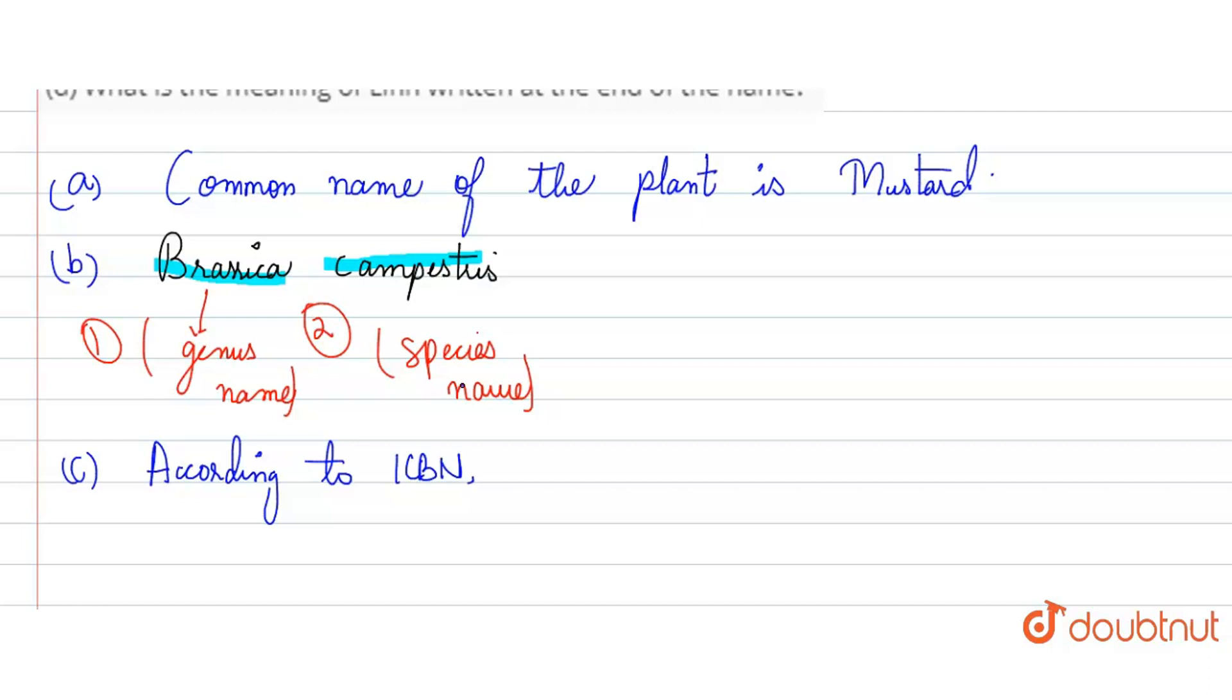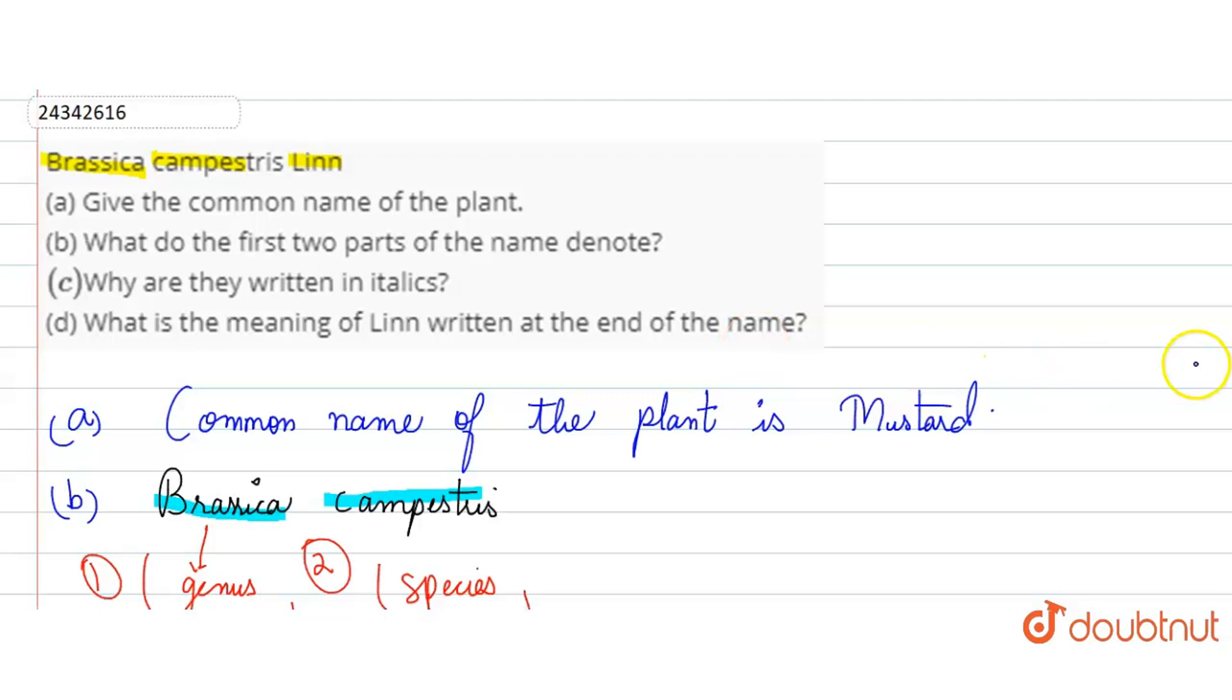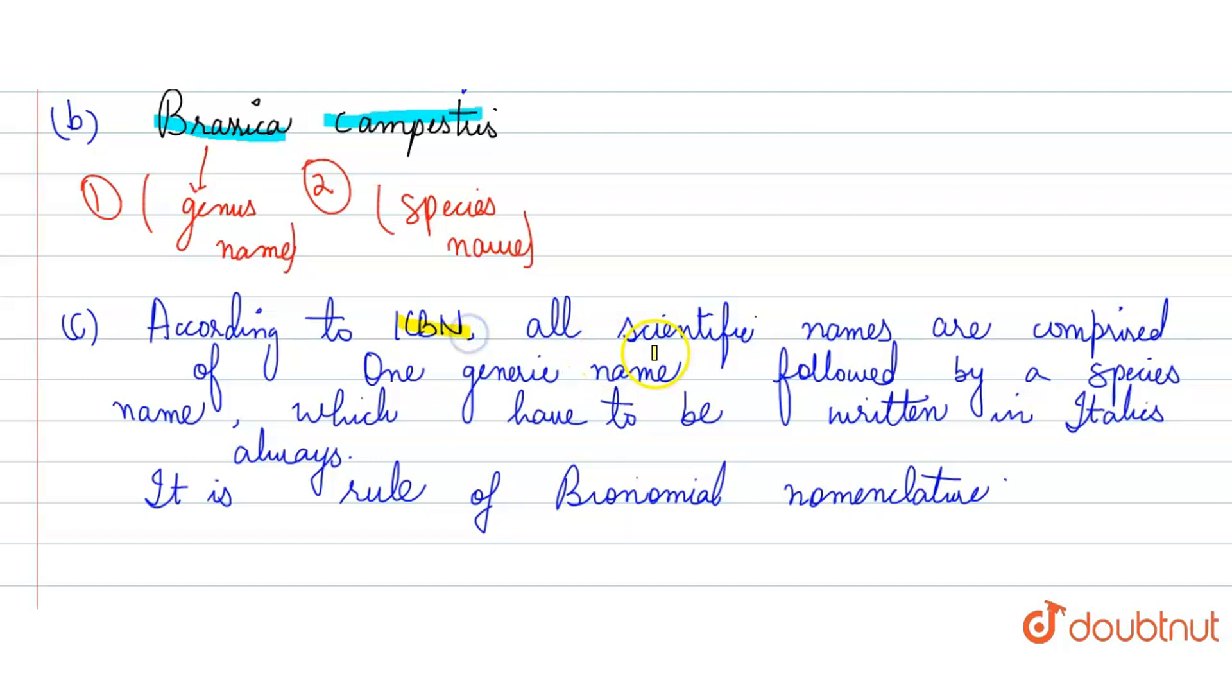So, why they are written in italics. The answer is according to ICBN. All scientific names are comprised of one generic name followed by a species name, which have to be written in italics always. It is a rule of binomial nomenclature.